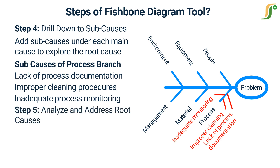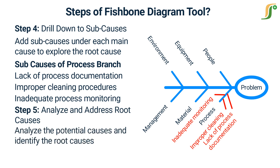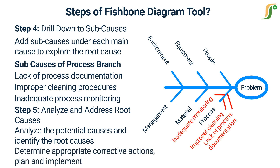Step 5: Analyze and address root causes — analyze the potential causes and identify the root causes that contribute most significantly to the problem. Once the root cause is determined, appropriate corrective actions can be planned and implemented. For example, if inadequate training is identified as a root cause, comprehensive training programs can be developed to address the issue. The fishbone diagram enables a systematic and visual approach to identify and analyze potential causes, helping teams focus on addressing root causes for more effective problem solving and continuous improvement.